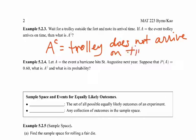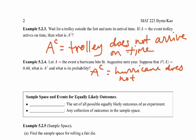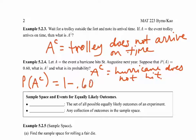Think of it as the negative of what the event is, because there could be other events occurring. We always want to think of it as the negative of the event we're interested in. Next one: a hurricane hits St. Augustine. If the probability of event A is 60%, the complement would be that a hurricane does not hit St. Augustine. The probability of A complement would be 1 minus 60%, which is 40%.